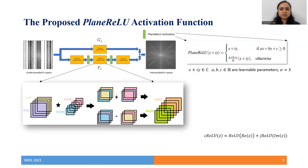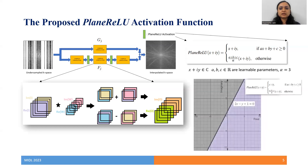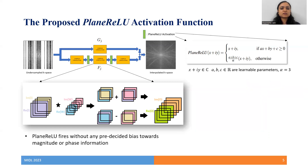To address these limitations, we propose the plane-ReLU activation function, which is inspired by the real ReLU. The real ReLU divides the real line into two parts about the fixed point, the origin. The plane-ReLU divides the complex plane into two parts about a learnable line, to one side of which it fires the input as it is, and to the other side it fires a scaled version of the input. Thus, plane-ReLU fires without any pre-decided bias towards input magnitude or phase information, and it does not distort the input phase information.